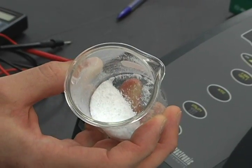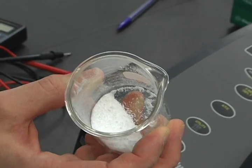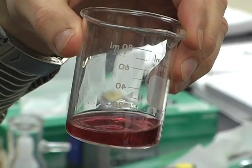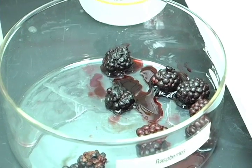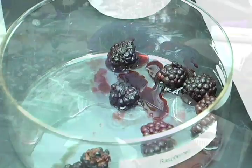One of them is titanium dioxide, which is a white powder that you'll find in toothpaste and white paint and lots of things. It's a common pigment and the other main component is fruit juice. We use blackberry juice or raspberry juice to actually absorb the solar energy and convert it to electricity.